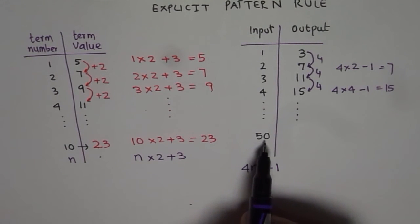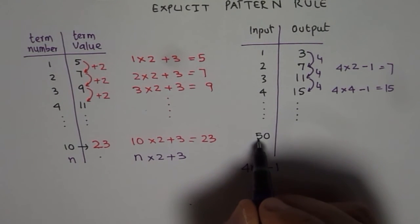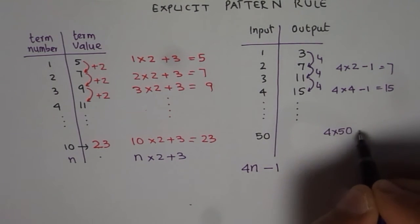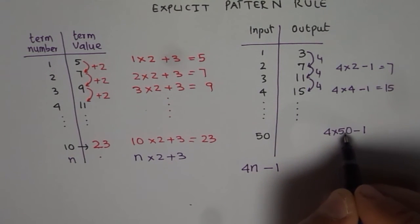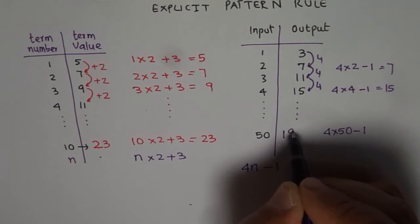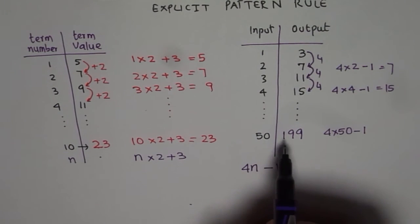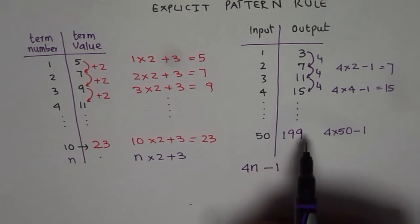So for the 50th input, I can multiply 4 times 50. So I should get 4 times 50 and then take away 1. 4 times 50 is 200. 200 take away 1 is 199. So that should be my number for this particular input. Input of 50 will give me 199 as the output.